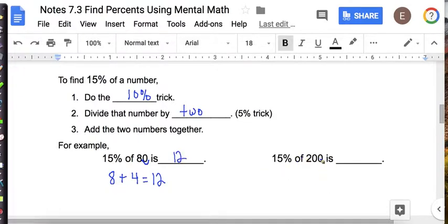Now I want 15% of 200, so the 10% trick gives me 20. And I want 5%, so I need to take half of 20, which is 10. And 20 plus 10 is 30.